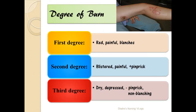Now let's look at how a patient clinically presents in different degrees of burn. In first degree burn, you may see red, painful, blanching lesions on the skin. In second degree burn, the patient presents with blistered skin — both superficial and deep burns can show blisters. It is painful, meaning the nerve endings are still preserved, which is confirmed by a positive pinprick test.